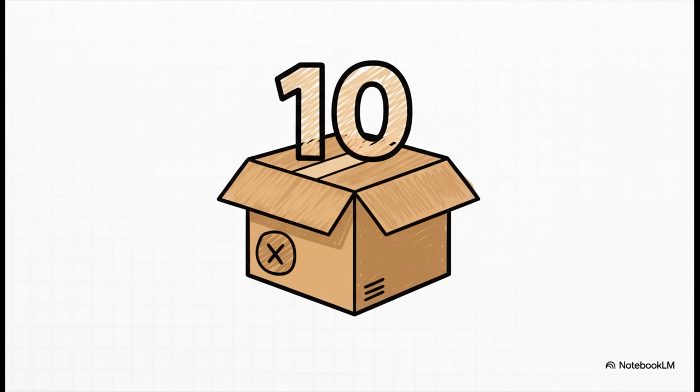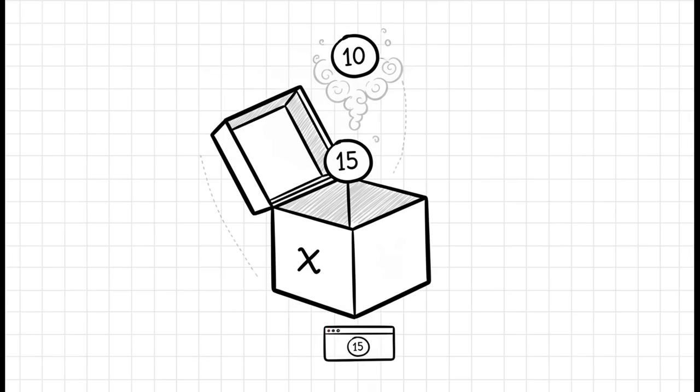So let's imagine we create a new variable. We'll call it X and we'll put the number 10 inside. Simple enough. We have a box labeled X and inside there's a 10. But then on the very next line of code, we can just say X equals 15. And what happens? The program goes and finds that box labeled X. It takes out the 10, throws it away, and puts 15 inside instead. So now if we ask the program, hey, what's in X? It's going to say 15. The old value is just gone.